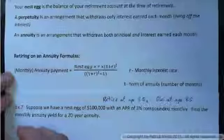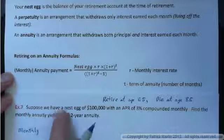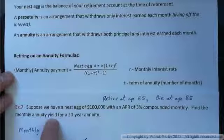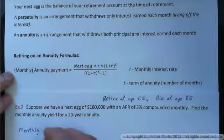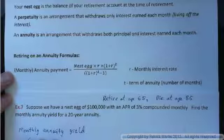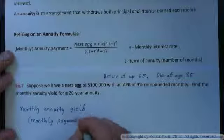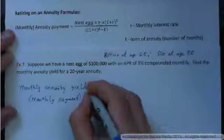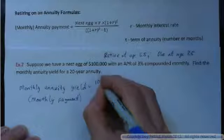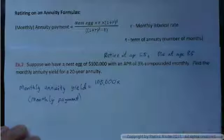Let's do example 7 slowly together. Suppose you have a nest egg of $100,000 with an APR of 3% compounded monthly. Find the monthly annuity yield for a 20-year annuity. The monthly payment equals the nest egg — which here is $100,000 — times R. We have to figure out what R is.